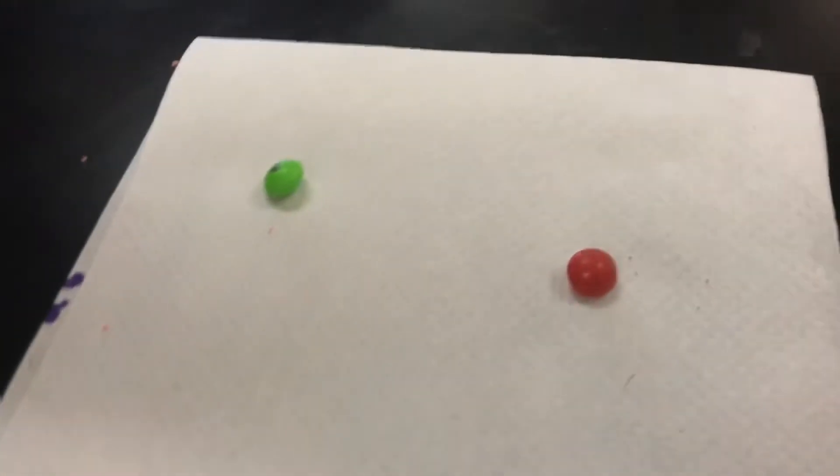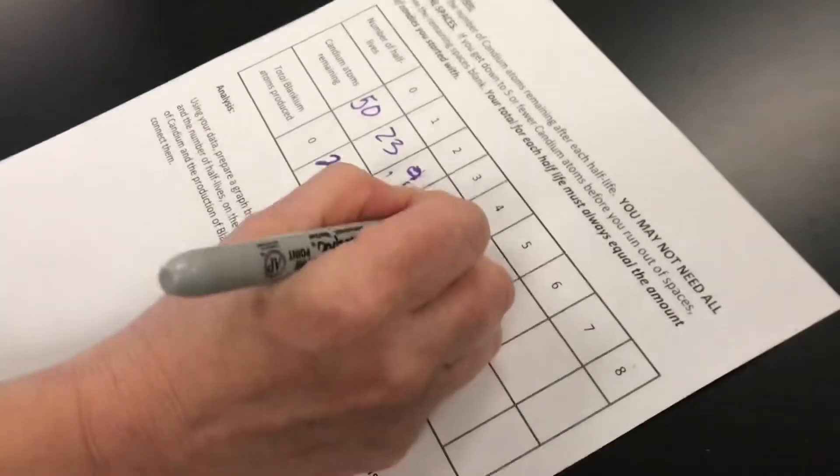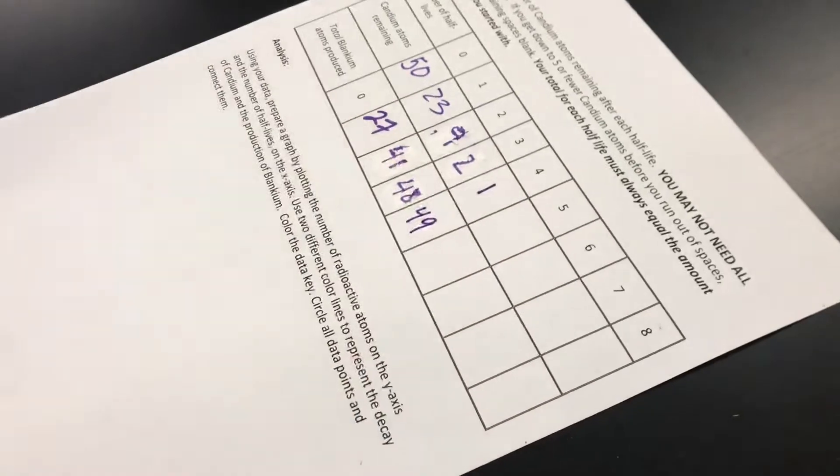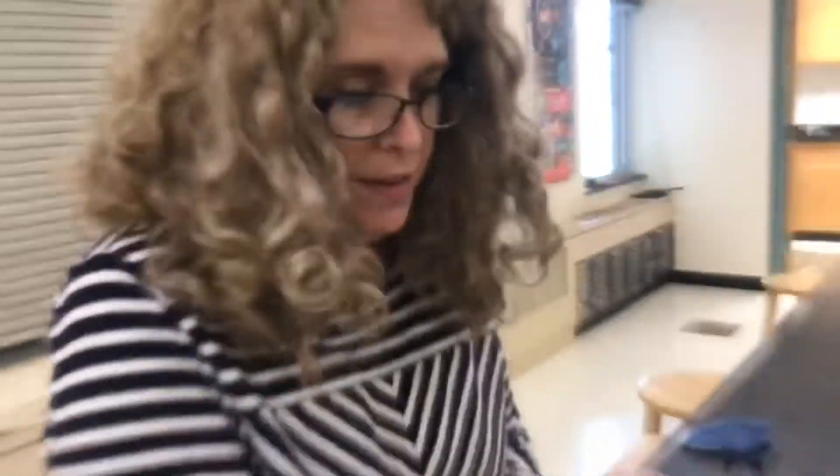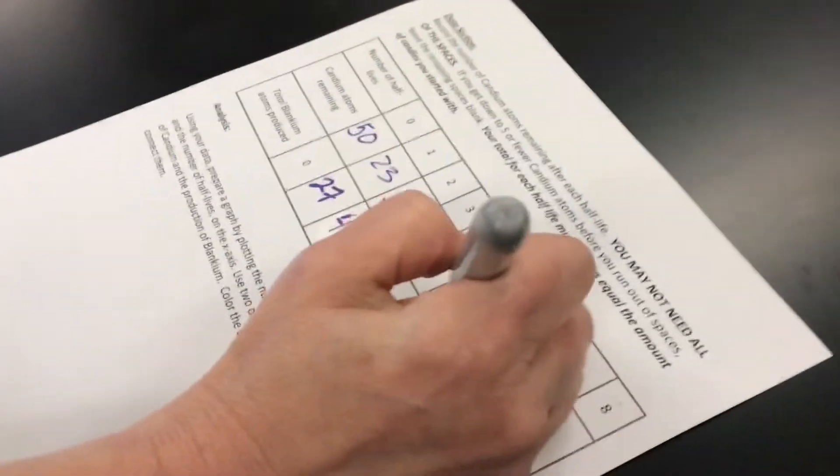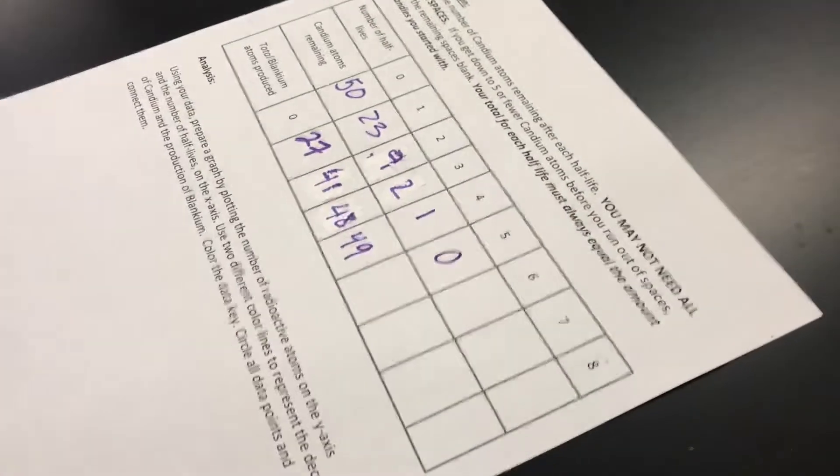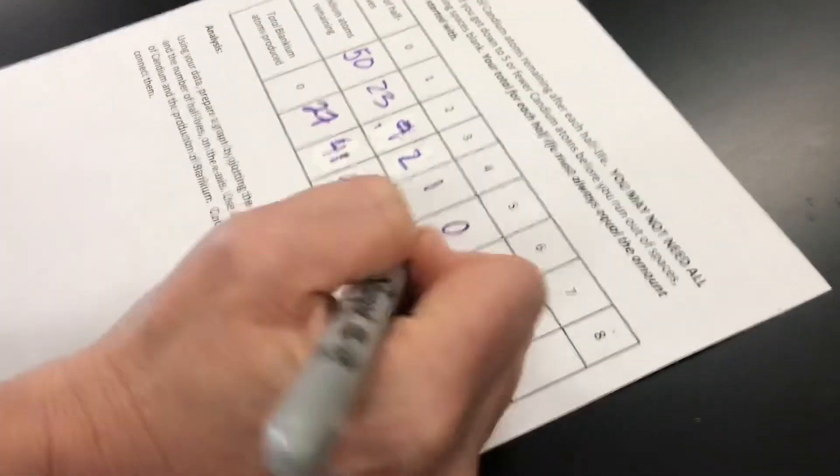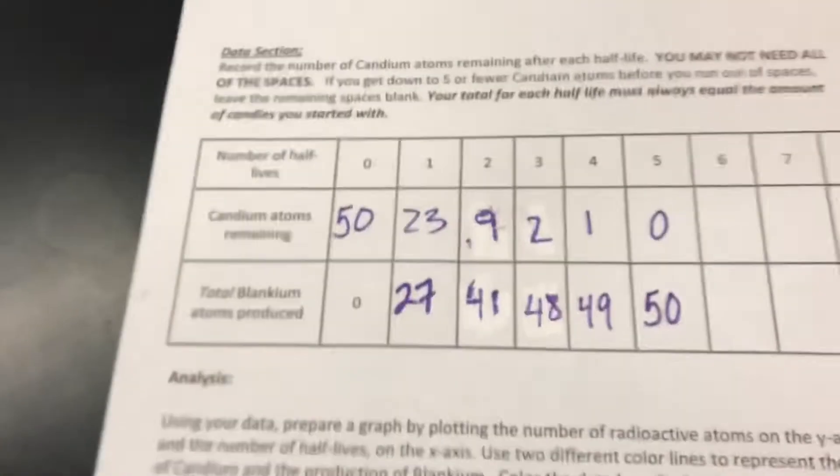Okay, so I have one more decayed, one radioactive skittle left. So then I have in my fourth half-life one radioactive skittle and I have 49 that have decayed. Alright, round five. And we have total decay. I have no radioactive atoms left and I have 50 decayed skittles.